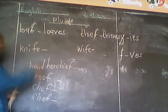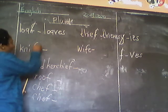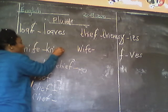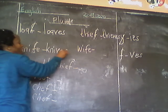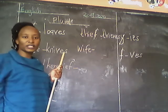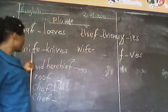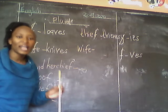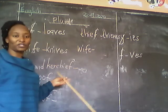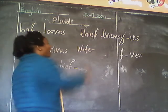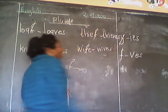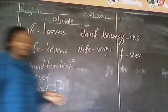One is a knife, but this time the F is there — we cancel that F, we write knife, then add VES. So one is a knife, many are knives. One is a wife — I have explained many times who is a wife — many are wives.